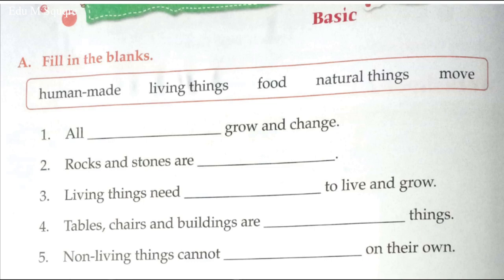Fourth question: Tables, chairs and buildings are dash things. The answer is Human made — tables, chairs and buildings are human made things. The last one: Non-living things cannot dash on their own. The answer is Move. Got the answers.